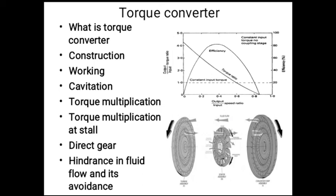To avoid this, the stator is mounted on a freewheel clutch, which allows it to rotate in the direction of the turbine or impeller. It cannot, however, rotate in the opposite direction. With this arrangement, the stator rotates in the desired direction and does not cause hindrance to the fluid motion.